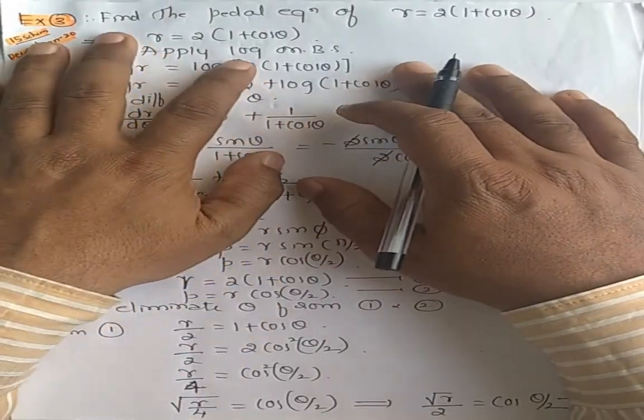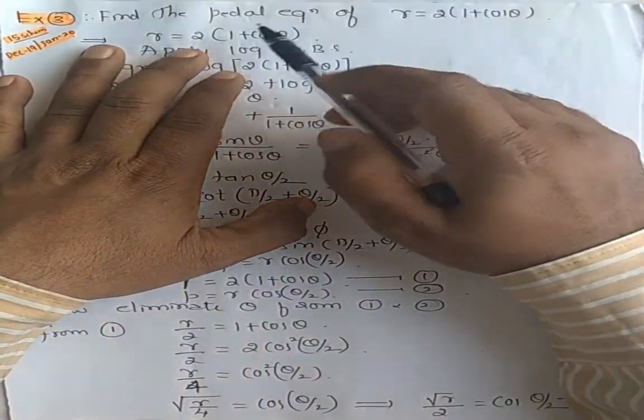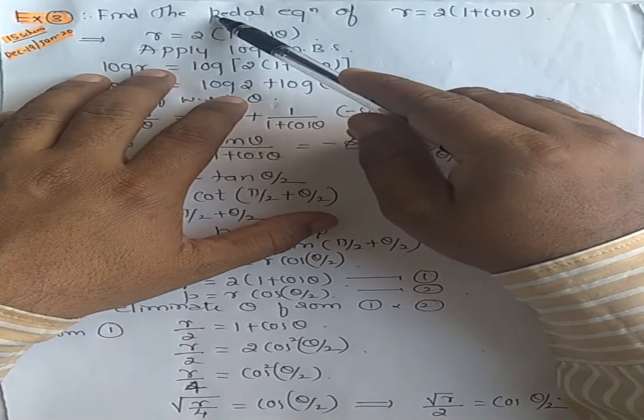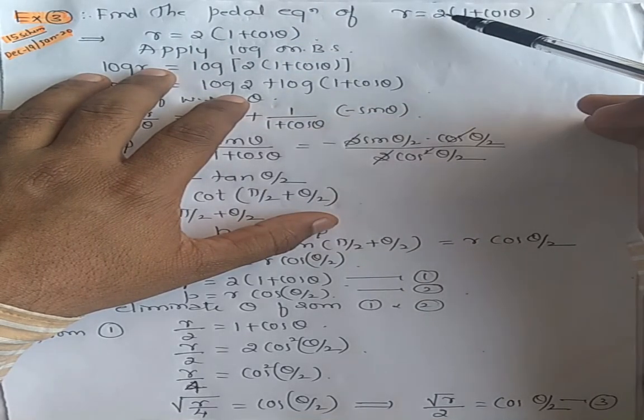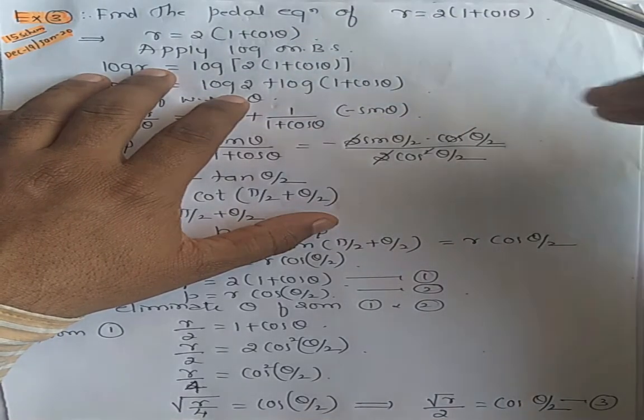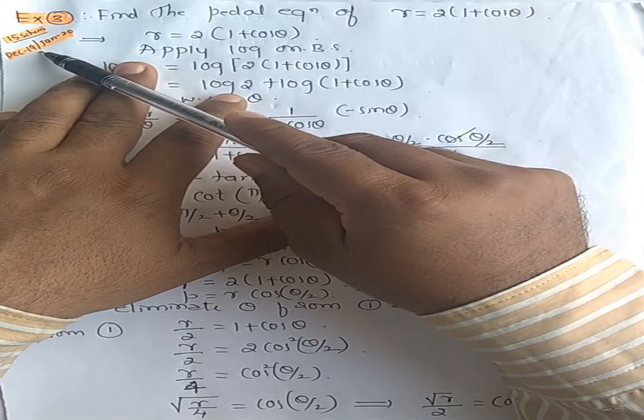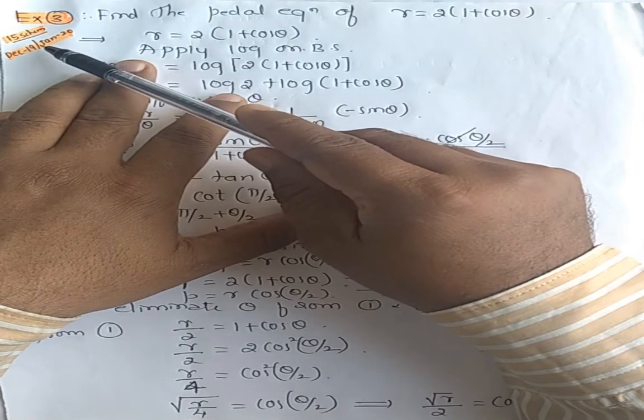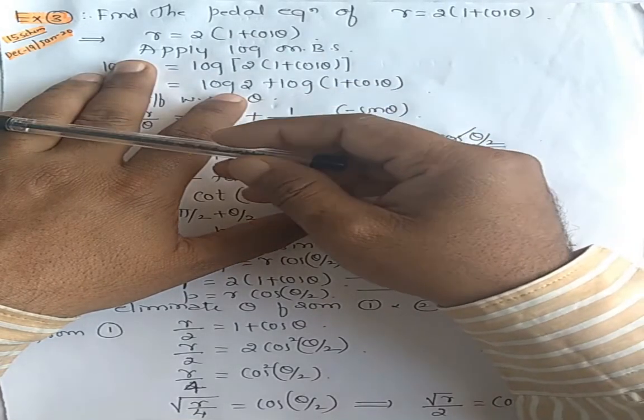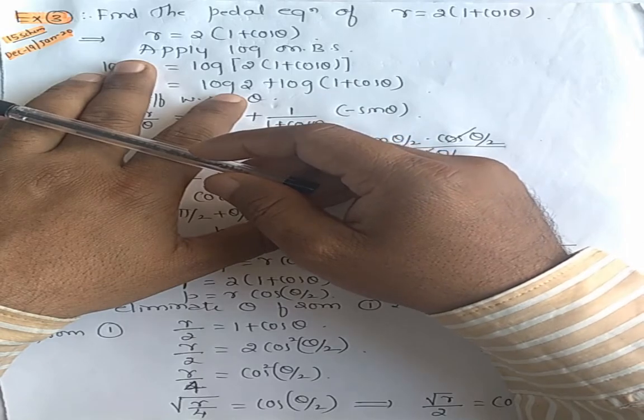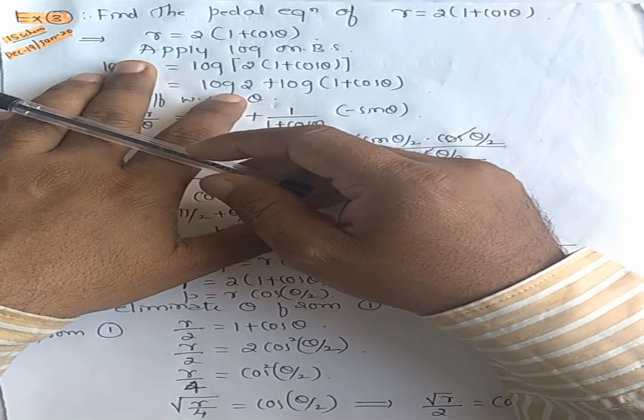Welcome dear students, let us move to the third example of pedal equations. Find the pedal equation of r equals 2 into bracket 1 plus cos theta. This is an example asked in December 19, January 20, the same exam. I have written this in example number 2, but that was the 18 scheme.